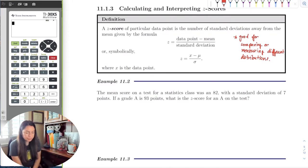For example, if you have a test score in a statistics class where the mean was 82 and standard deviation was 7, if a grade A is 93 points, what is the z-score for an A on the test? The z-score is again standardizing a data point so that we're able to compare different distributions. We want to standardize the normal distribution. With the x-axis, we have the tick marks and the z-score allows us to identify and standardize a particular observation